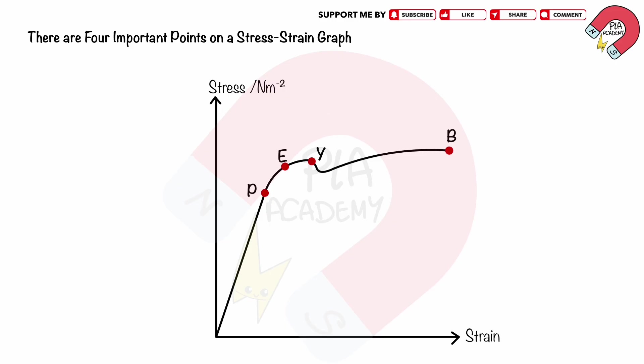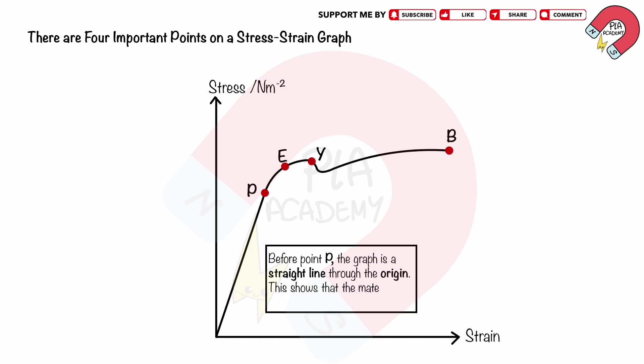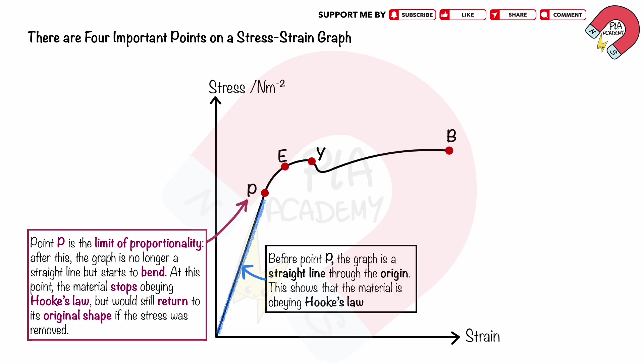There are four important points on a stress-strain graph. In the exam, you could be given a stress-strain graph and asked to interpret it. Before point P, the graph is a straight line through the origin, showing that the material is obeying Hooke's law. Point P is the limit of proportionality. After this, the graph is no longer a straight line but starts to bend. At this point, the material stops obeying Hooke's law, but would still return to its original shape if the stress was removed.